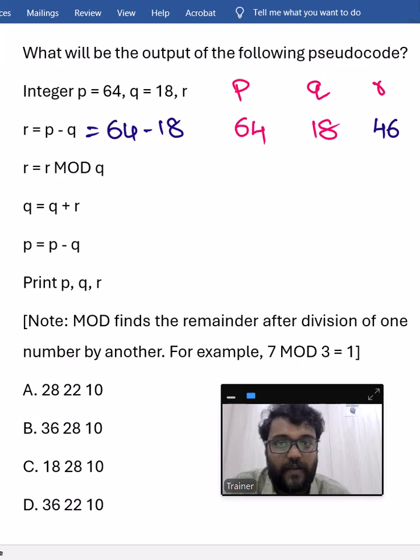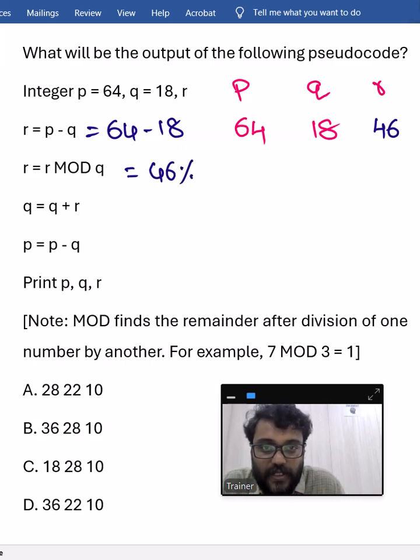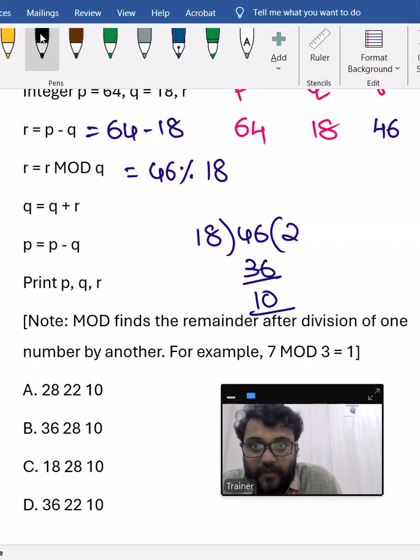46, okay. r value is 46. Next, r equal to r mod q, so r is 46 modulus, which is like a percentage symbol, q is 18. So when 46 is divided by 18, what is the remainder? 46 divided by 18, the remainder is nothing but 10. Now r is updated to 10. Previous r value was 46, now it is updated to 10.